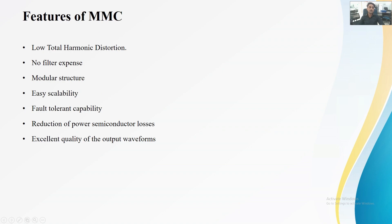These are some features of the MMC: it has low total harmonic distortion, and it doesn't need any filter as its output waveform is nearly sinusoidal. Its modular structure helps us to get the desired output waveform, and it can easily scale up or scale down by adding or subtracting submodules. Moreover, it has higher fault tolerance capability than other topologies, and its switching losses and semiconductor losses are much less, with excellent output waveform quality.